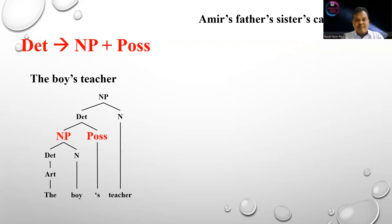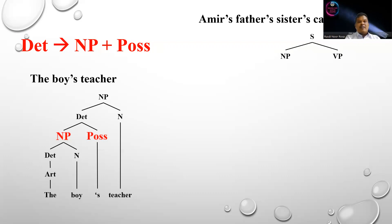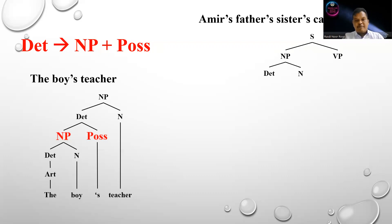There are three instances of NP-POS in this sentence: Amir's, father's, and sister's — all represented by apostrophe S. As usual, a sentence is composed of NP plus VP. We focus first on the NP, which is composed of determiner and noun.